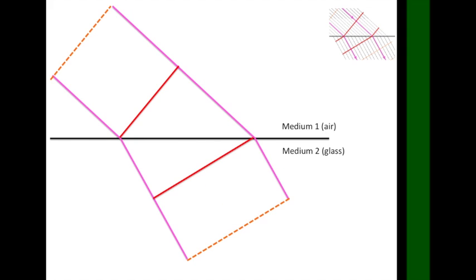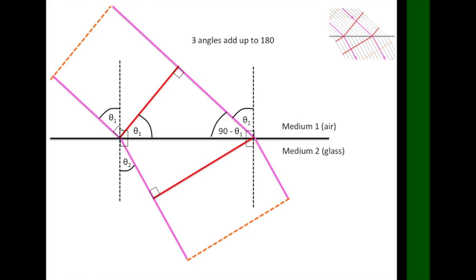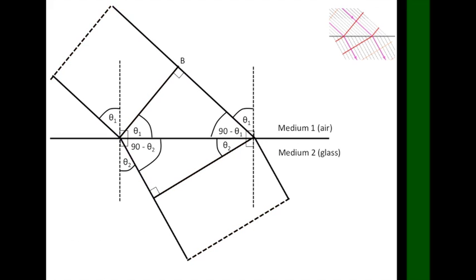If we now mark on the normal, that's 90 degrees to the boundary, and mark on various right angles, we can apply some maths to deduce some very important angles. First, this angle plus theta1 must add up to 90 degrees, and then the three angles of any triangle must add up to 180, so this angle here must also be theta1. We can apply the same process for theta2 in the second medium, completing it as so.